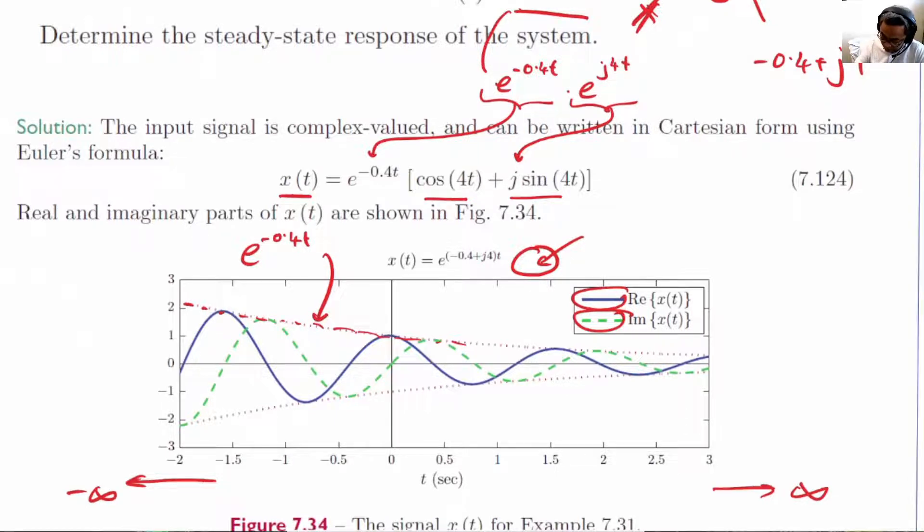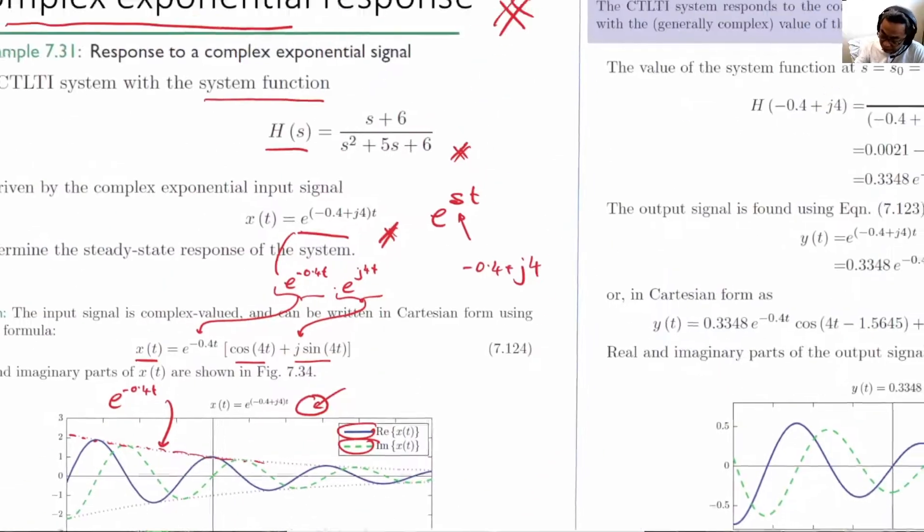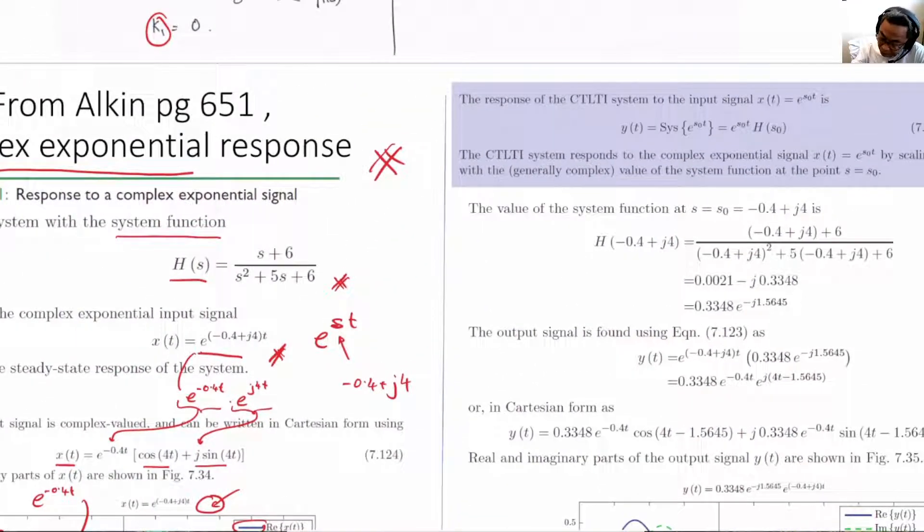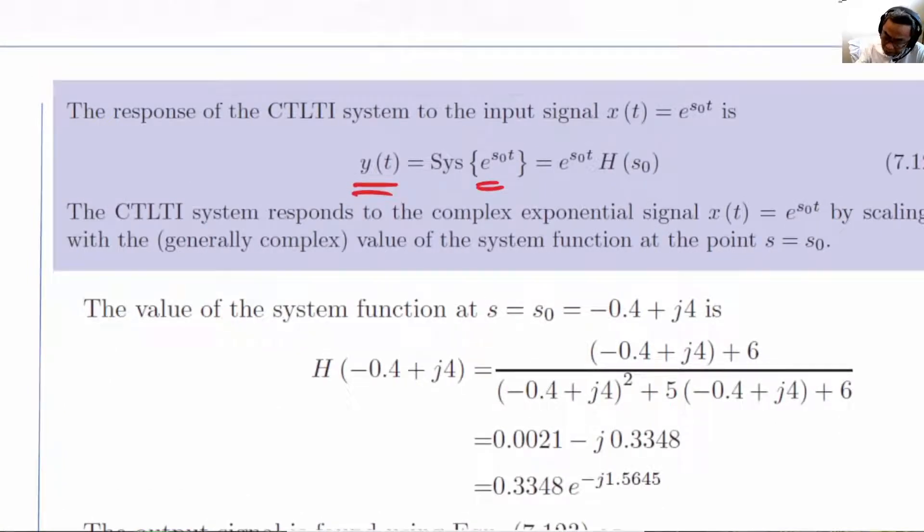And in this case, the theory tells us that the output to an everlasting complex exponential is the complex exponential, which is this value here, multiplied by the transfer function evaluated at s₀.